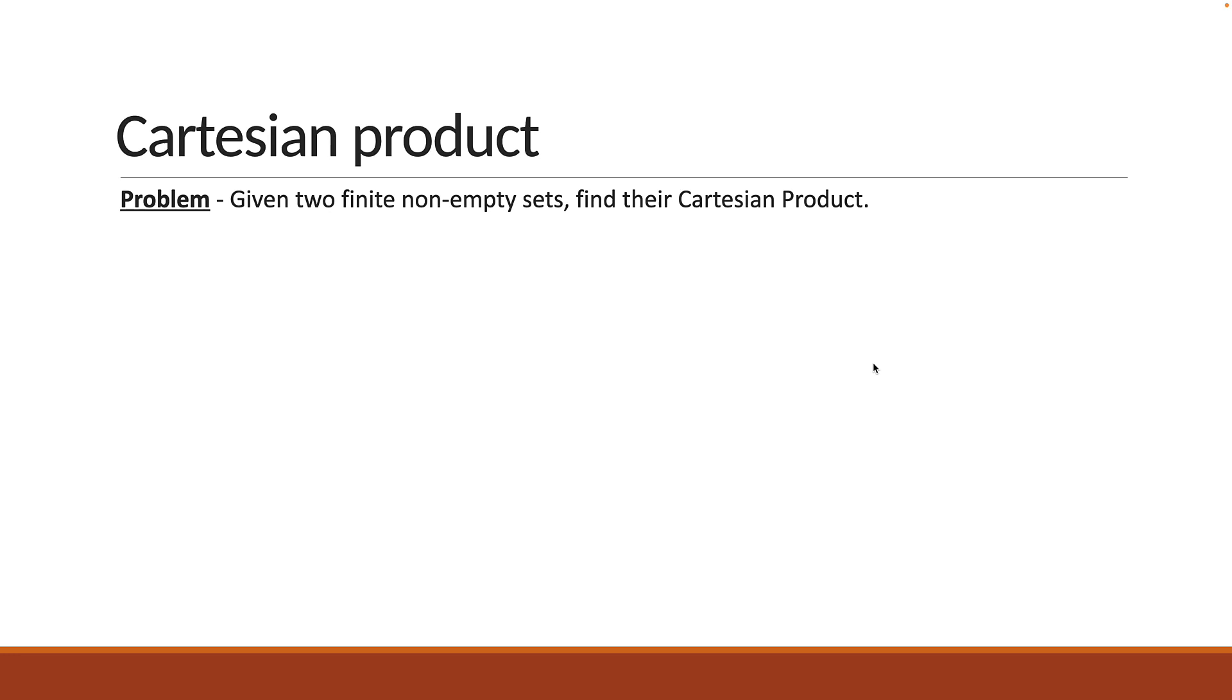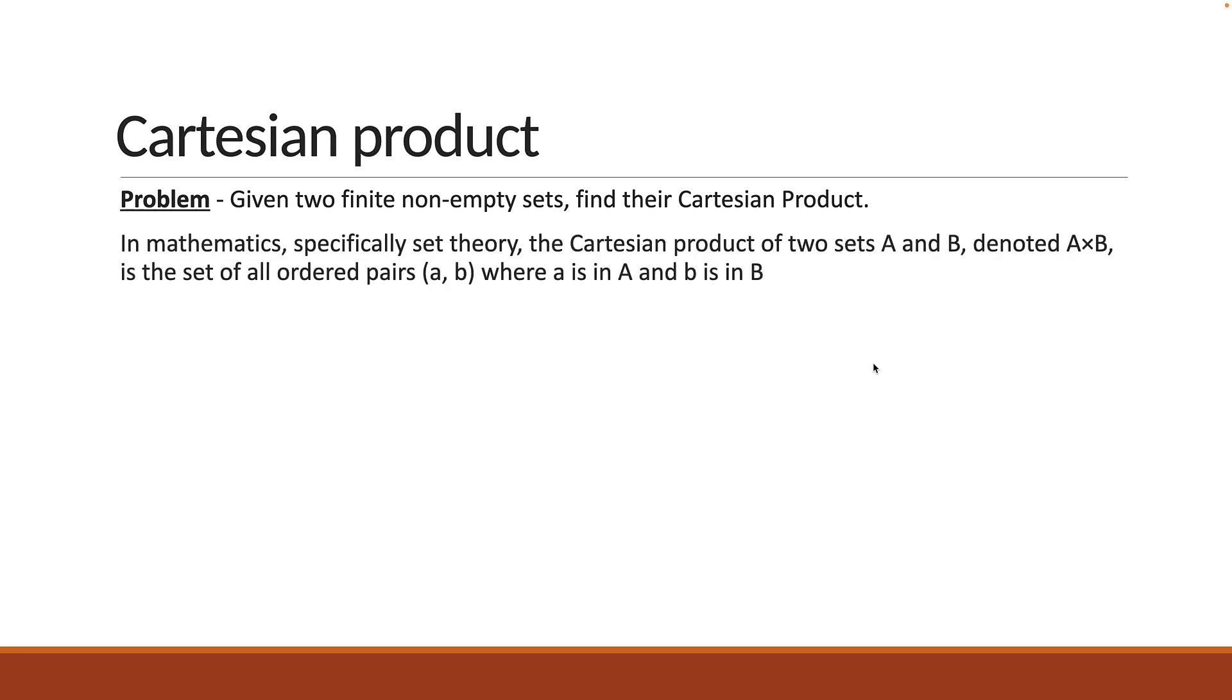Now what is Cartesian product? Well in mathematics, specifically set theory, the Cartesian product of two sets A and B, denoted A×B, is the set of all ordered pairs (a, b) where a is in A and b is in B.